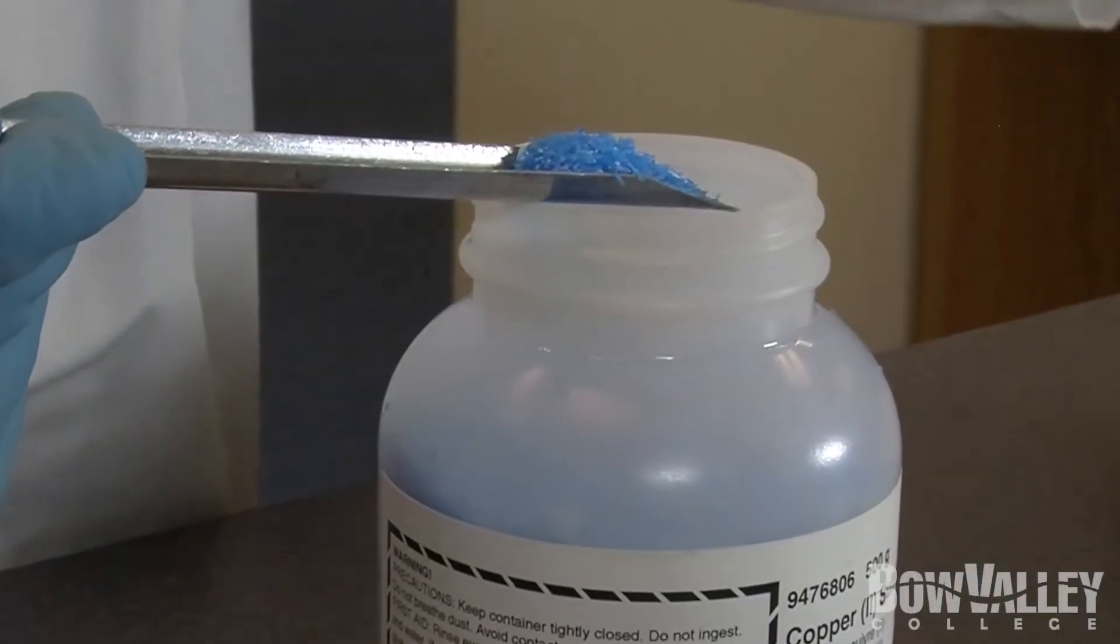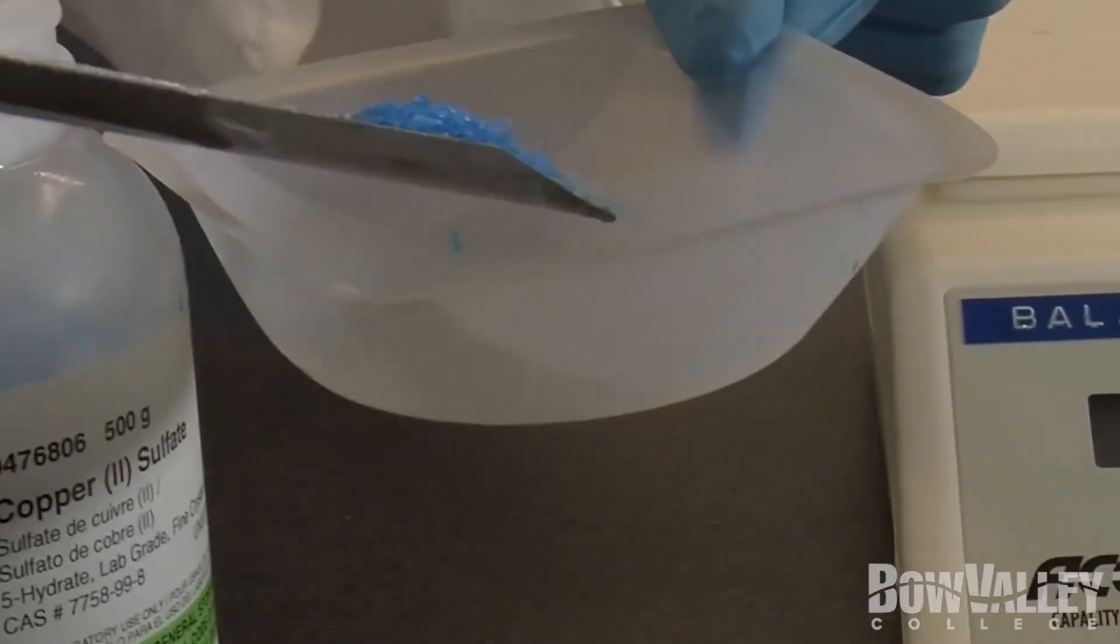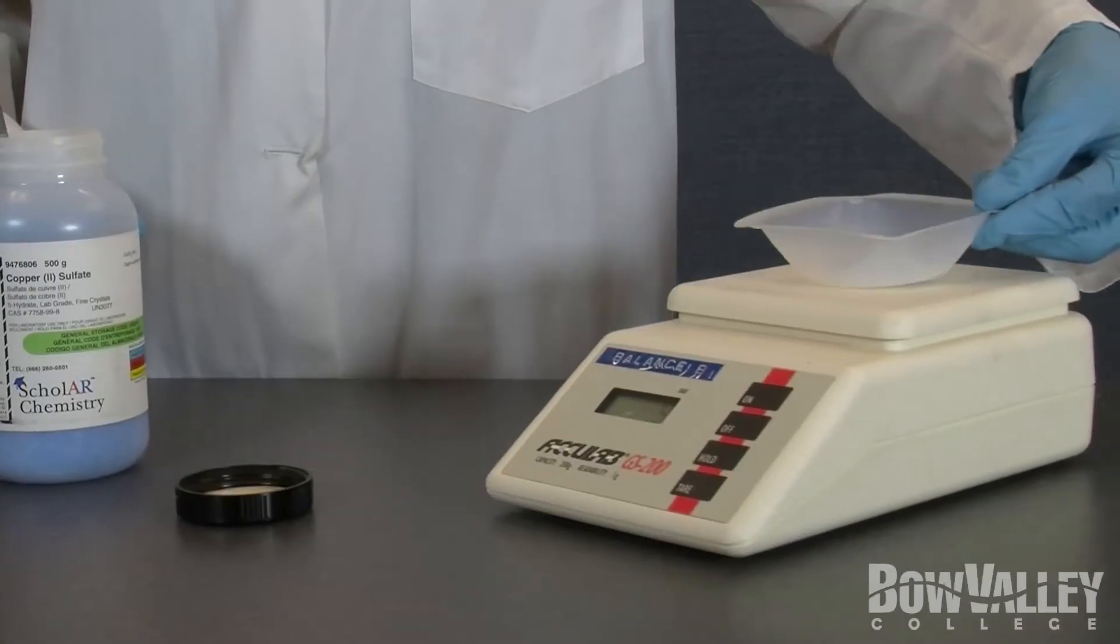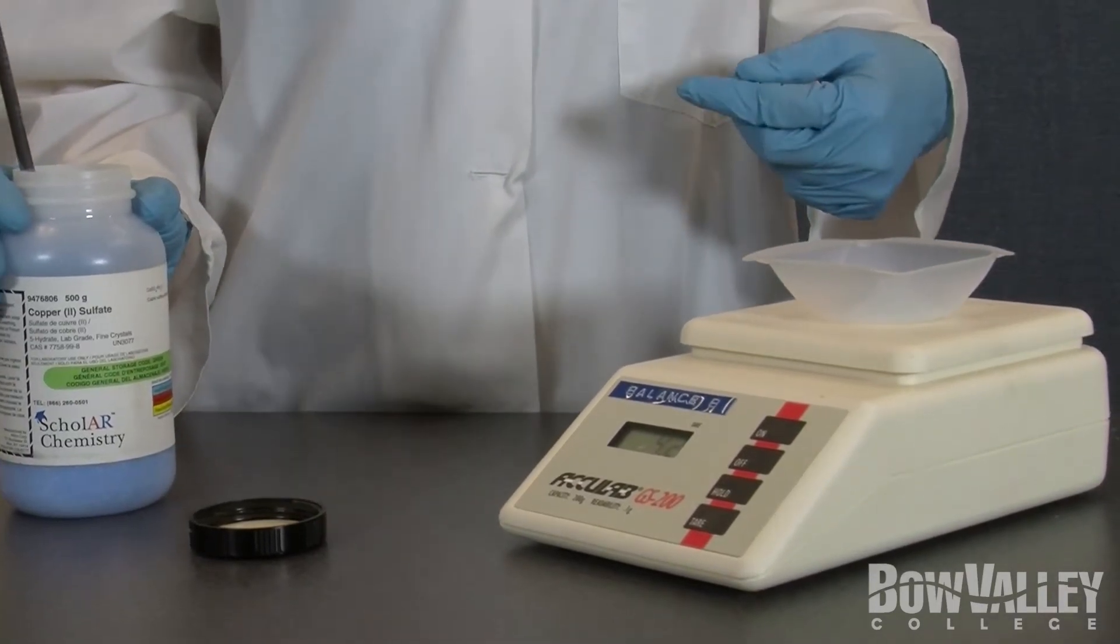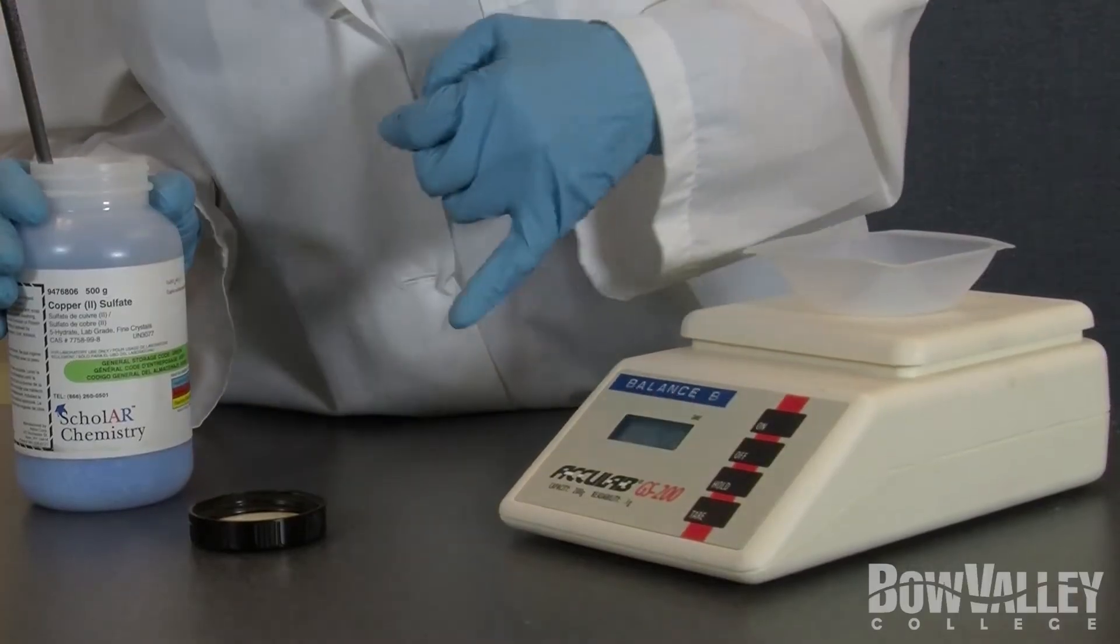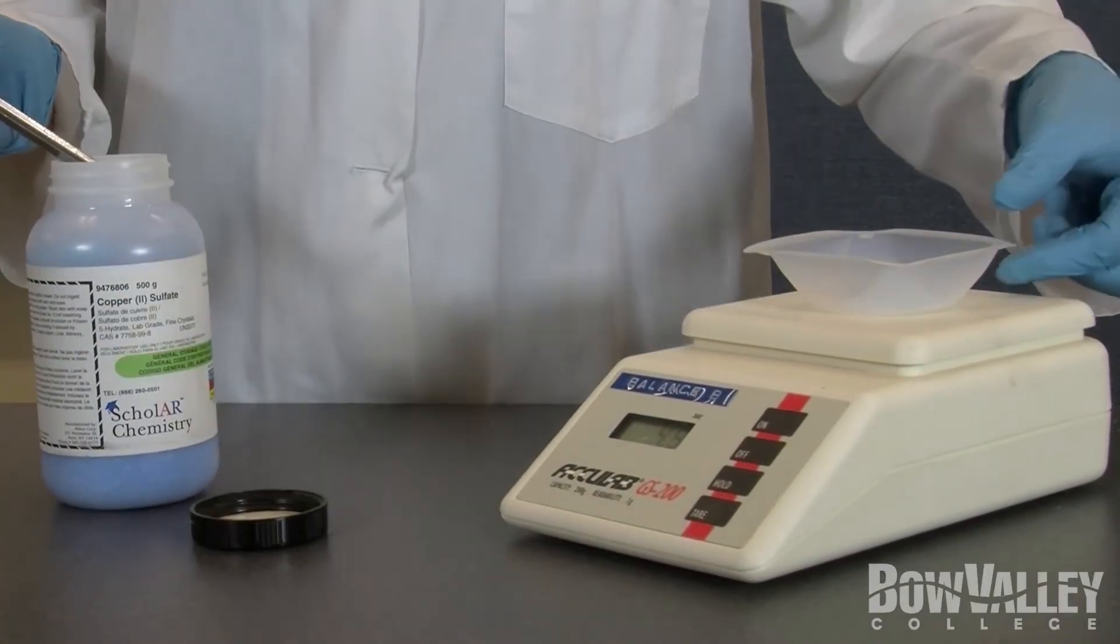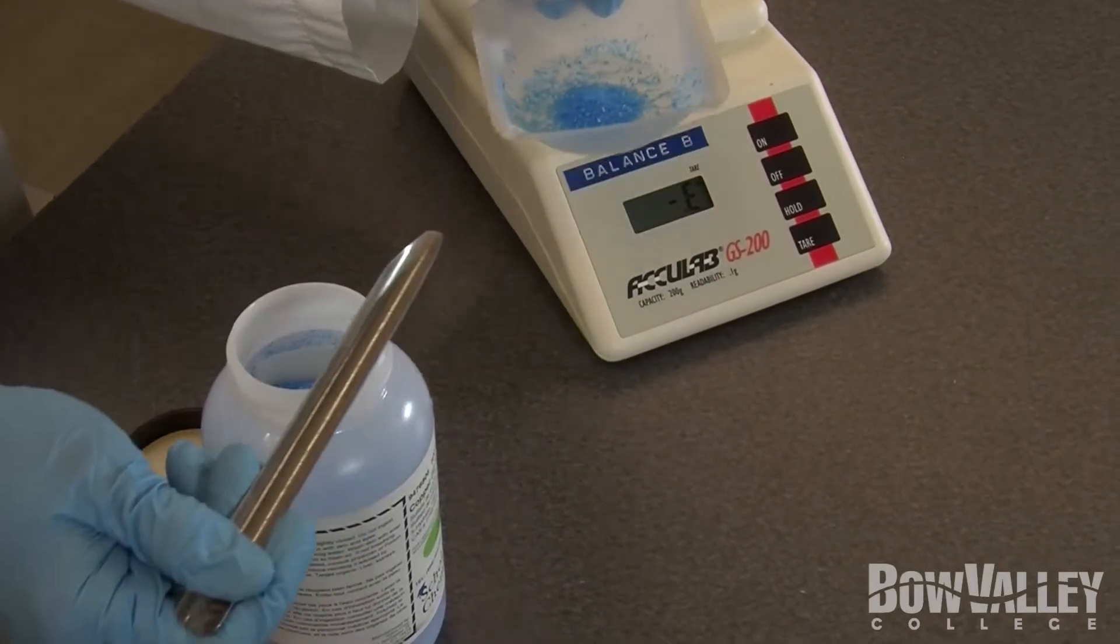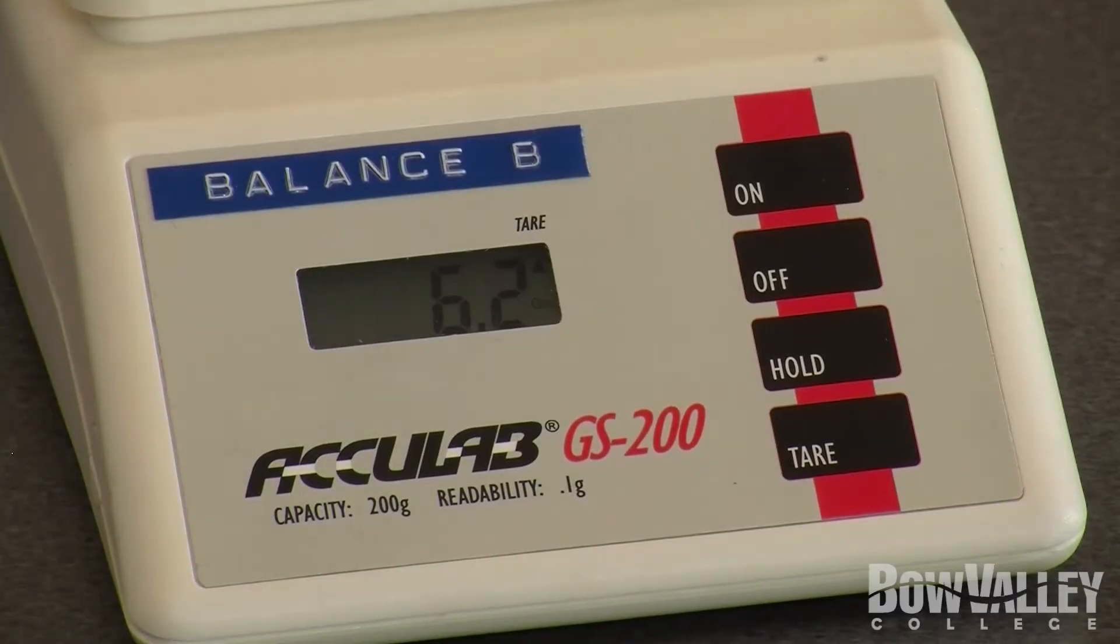Take the weighing boat off, put your product inside and place it back on the scale. The reason we do this step is to avoid any contamination of the scale or the product. We have a reading of 4.2, we need to still add more product. We have reached our value needed, 6.2. We are now ready to make the solution.